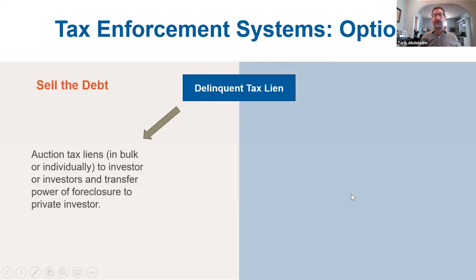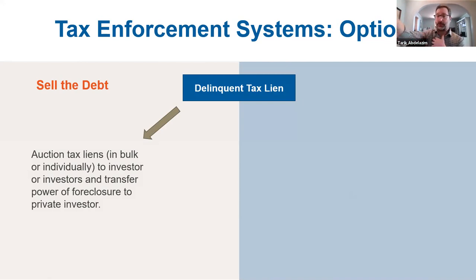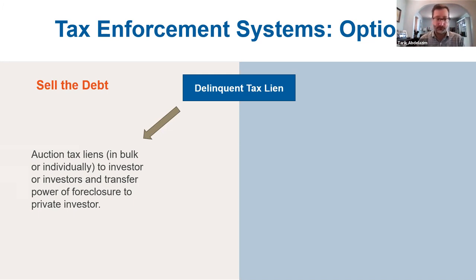There are generally two options for what happens with a delinquent tax lien. Governments can either sell the debt — after a year has gone by with an unpaid tax bill, the government can sell it at auction to private investors. The government gets immediate cash flow in return. The problem is it transfers the incredible power of foreclosure to a private investor, meaning those pipelines basically don't exist in a community that sells tax liens.